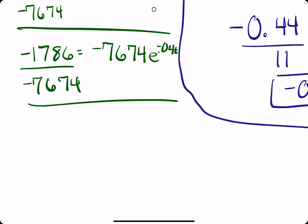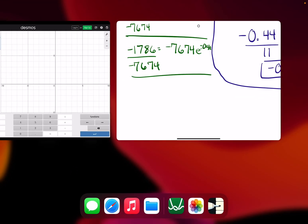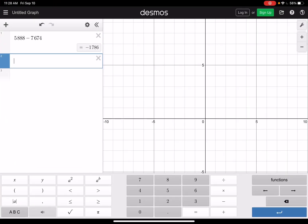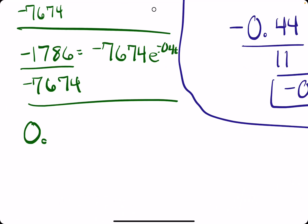Then we divide by that number. Negative divided by negative gives us a positive. So 1786 divided by 7674 equals 0.233, which equals E to the negative 0.04T.